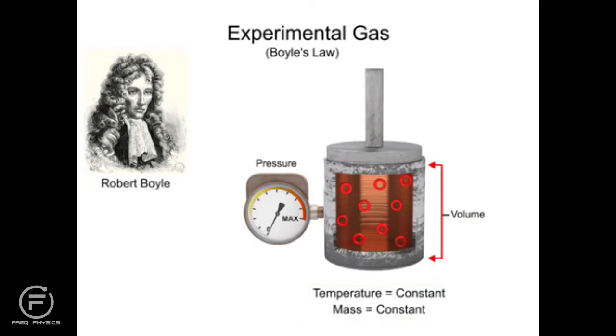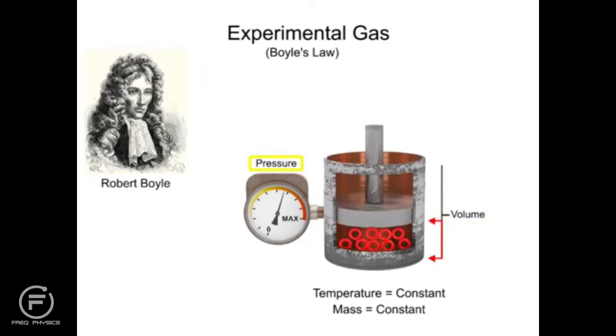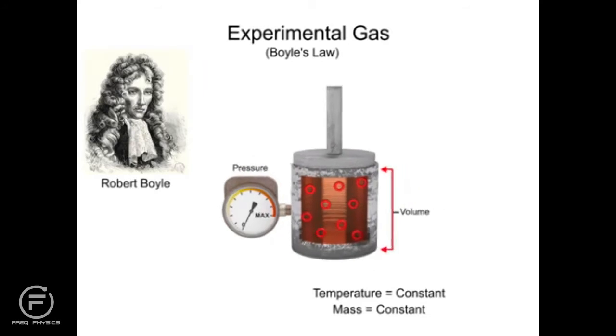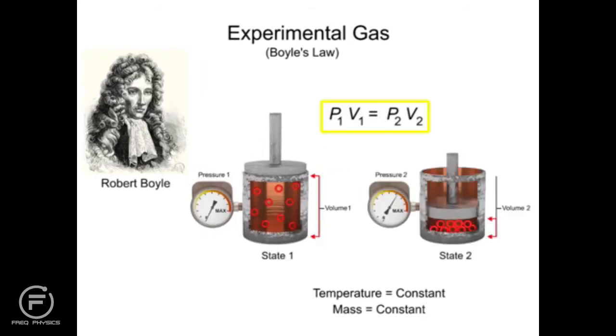In a physical system, this means that as the volume decreases, the pressure increases. Similarly, as the volume increases, the pressure decreases. Boyle's Law can be expressed mathematically as the pressure at state 1 times the volume at state 1 is equal to the pressure at state 2 times the volume at state 2. This is true as long as both the temperature and mass, or amount of gas, remains constant.